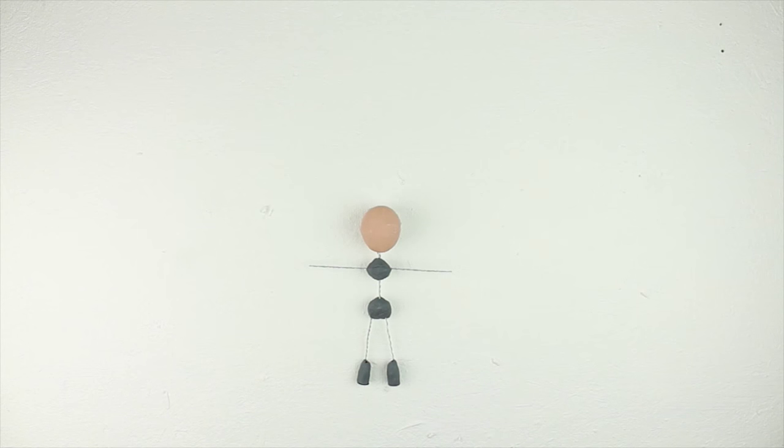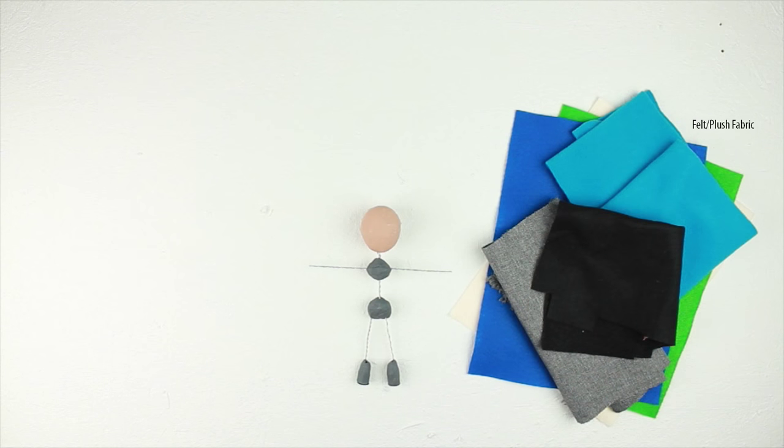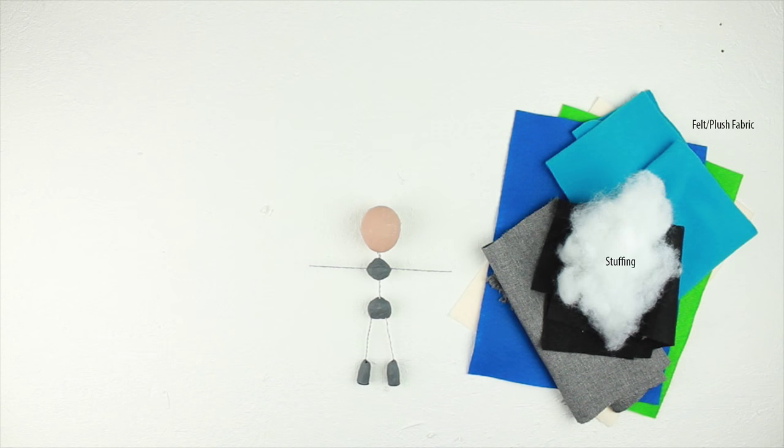So for this part you're going to need your armature, of course, felt or plush fabric in all the colors you're going to use, including skin tone, clothing, and any other accessories you plan on making, cotton or polyester stuffing, spools of thread that match your felt colors,